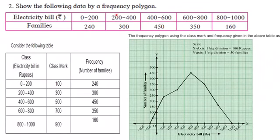Show the following data by a frequency polygon. Electricity bill in rupees is given: 0 to 200, 200 to 400 rupees. Likewise, intervals are given up to 800 to 1000 rupees.